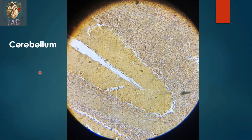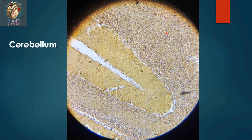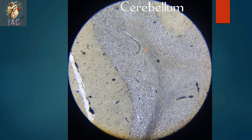Another slide with a different stain — this is the special stain for nervous tissue. Here you can see the outer area where the molecular layer is present, and here you can see the middle Purkinje cell layer and then the inner granular layer.